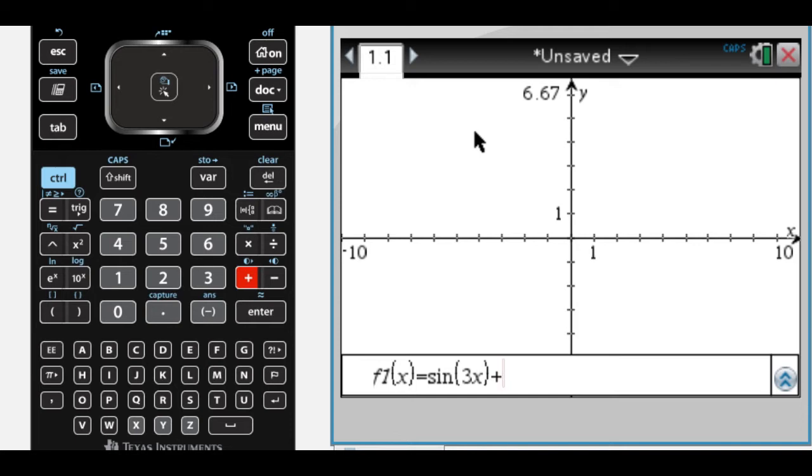So the trig function I want to do is sine of 3x plus 2 cosine of 4x over 3. Okay, so press enter.